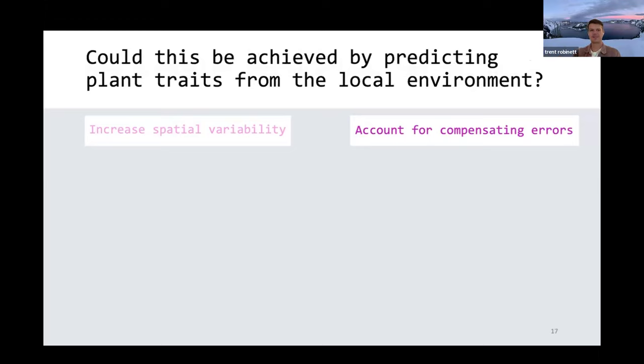The outset goal of increasing spatial variability, but then we also want to be able to account for these compensating errors that we know exist in our model. So today I'll be asking, could we achieve both of these needs by predicting our plant traits in any location as a function of their local environment?